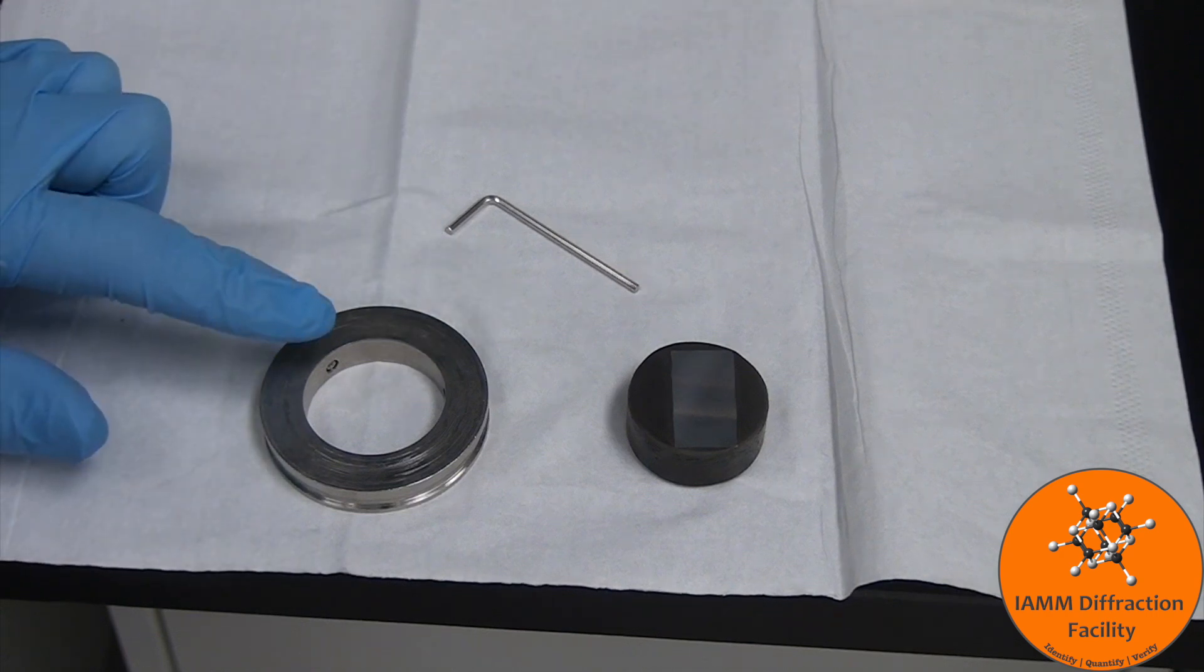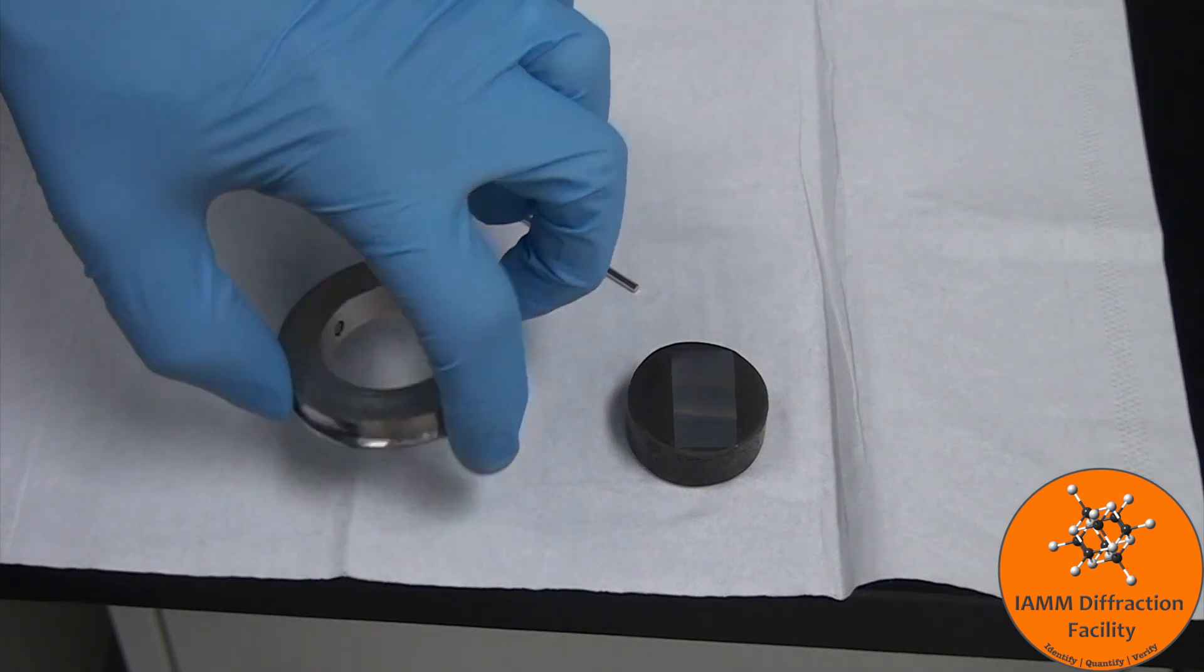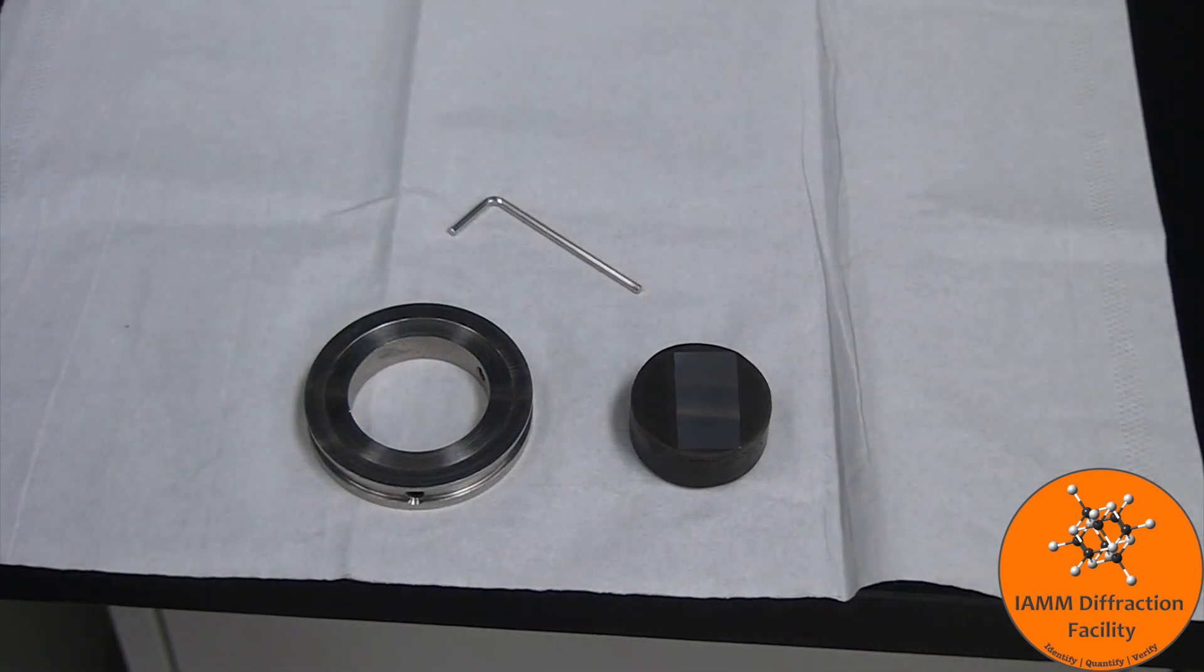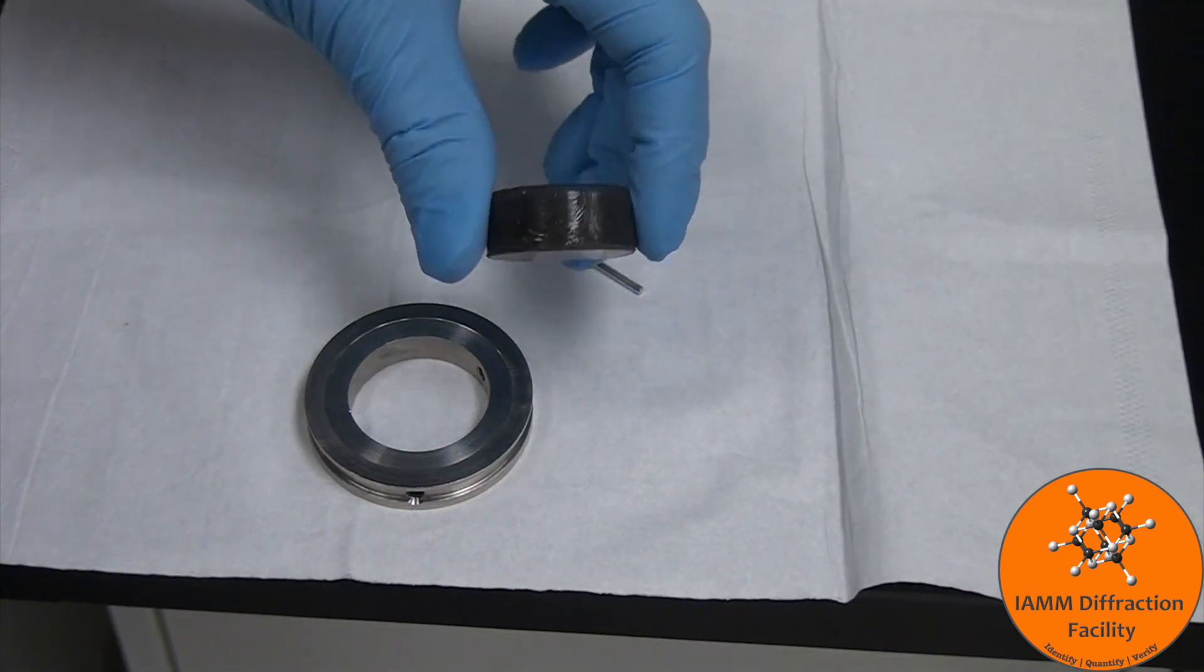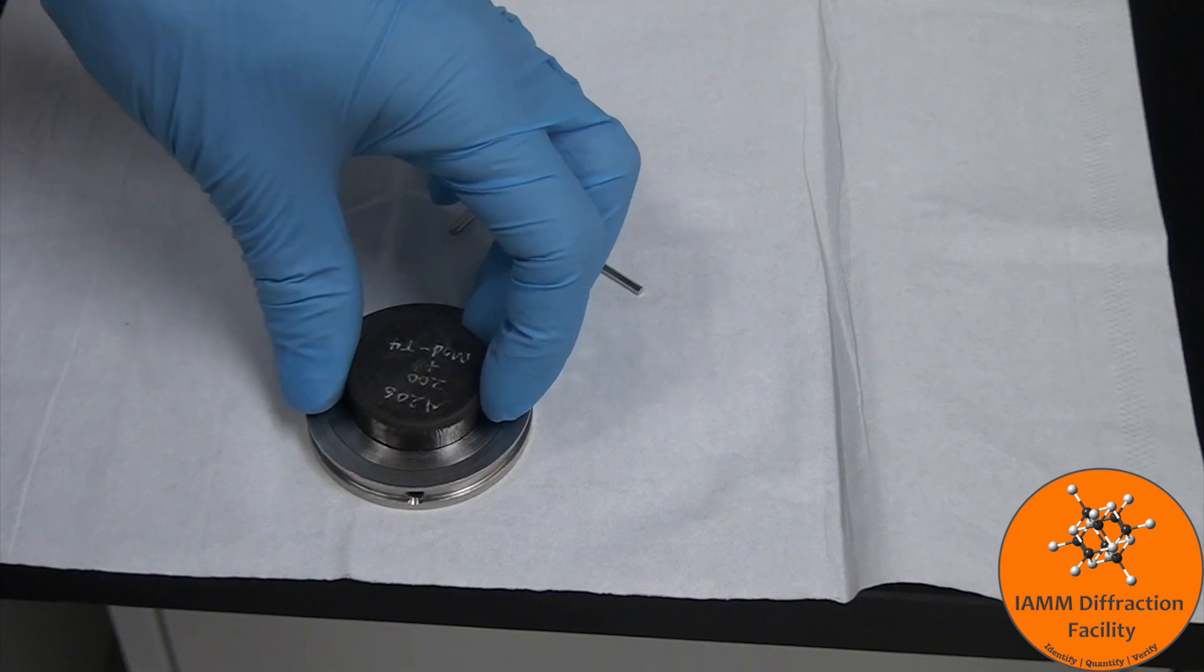Once you know the upright position, you want to flip it over. I will mention that I like to put down a chem wipe first to protect the surface of my sample. Because I'm going to take my sample, flip it over, and place it into the sample holder.